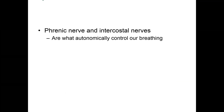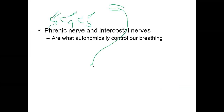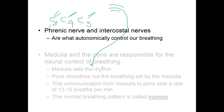The phrenic nerve comes from C3, C4, and C5 — it innervates your diaphragm. The expression is: C3, C4, C5 keeps the diaphragm alive. These are cervical nerve roots that come out of the neck and come together to form the phrenic nerve, which travels down to the diaphragm so you can breathe.